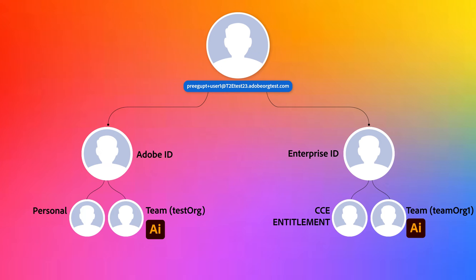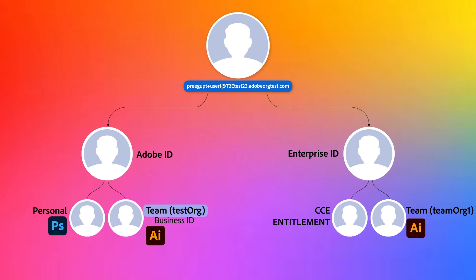Here's a quick recap of the order in which this configuration can occur. First, the user begins with an Adobe ID — in our example, the user purchased Photoshop. Then a team is created and that team invites this user. When the user accepts the invite, the business ID gets attached to the user's Adobe ID. This means there is an entitlement profile that cannot be logged into directly — rather, it is a member of a team. In order to log into that team entitlement profile, the user must first log into their Adobe ID and then select the team entitlement profile.